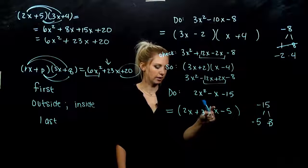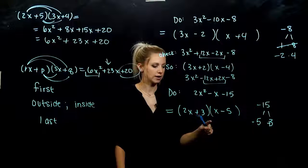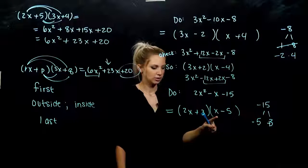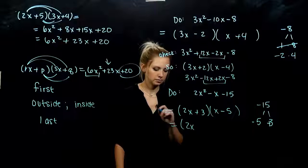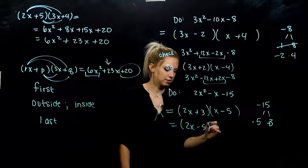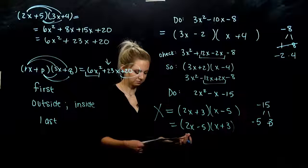Do we get close? 2x squared minus 10x plus 3x. Not even close. So let's try flipping it. If I have, this one was not good. If I put negative 5 over here and a positive 3 over there, let's try that one. See if we get any closer.